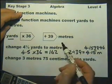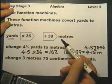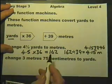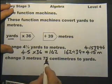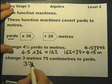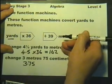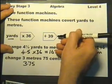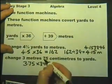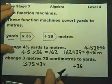You can actually use the same function machines back the other way — starting with metres and going back to yards. So change 3 metres and 75 centimetres. Written as a decimal that's 3.75. Going through the function machine in the opposite direction, you do multiply by 39 first, then divide by 36.